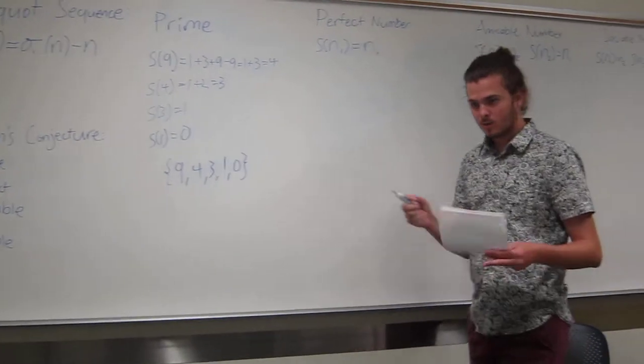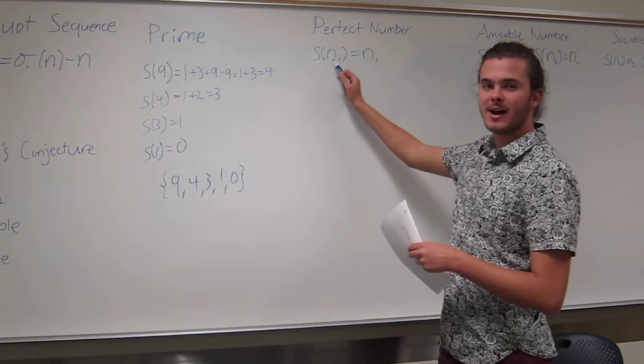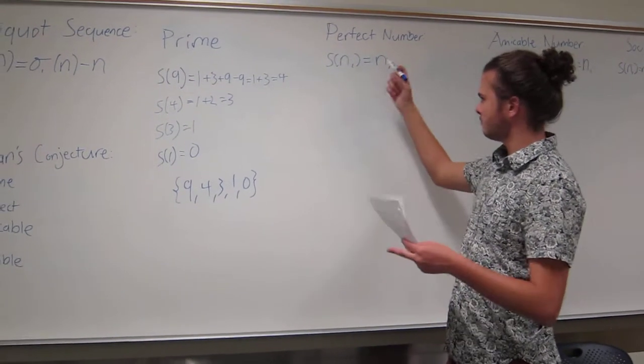Let's go to perfect numbers. What's a perfect number? A perfect number is basically when the sum of the proper divisors is equivalent to the number. A quick example, 6.